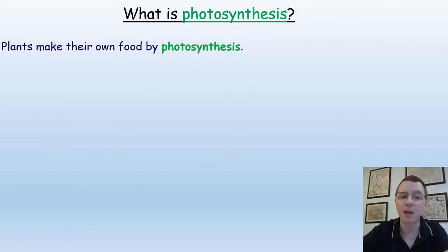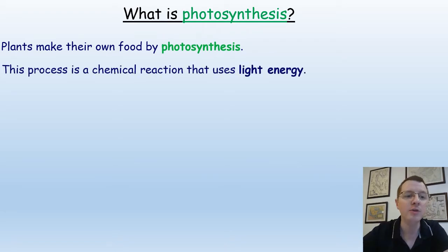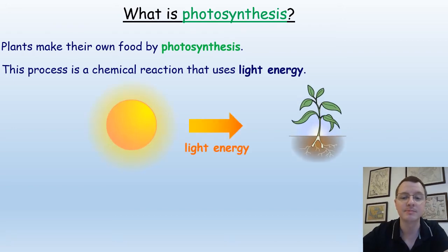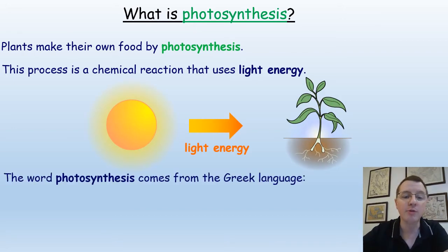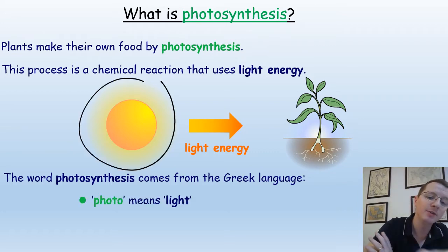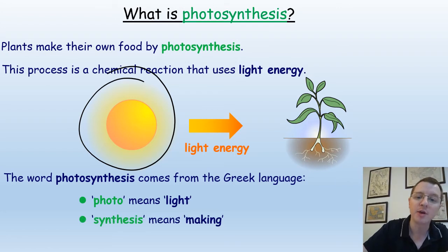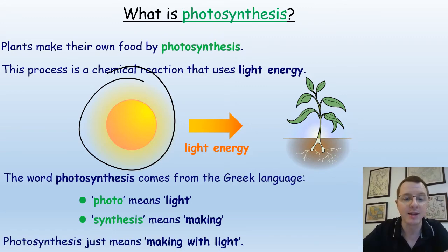So plants make their own food by photosynthesis, but what is photosynthesis? Well, this is a process, a chemical reaction that uses light energy. The word photosynthesis comes from the Greek language. Photo meaning light and synthesis meaning to make. So photosynthesis means to make something using light energy.